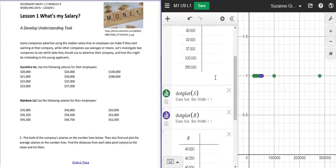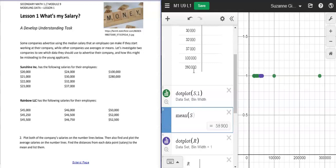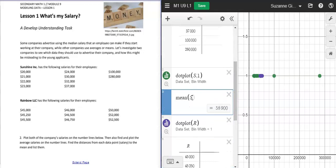From here, if I wanted to calculate things with the computer, like the mean, I could add another expression and type in mean. I can get the average of the data that I have labeled S or the data that I have labeled R.